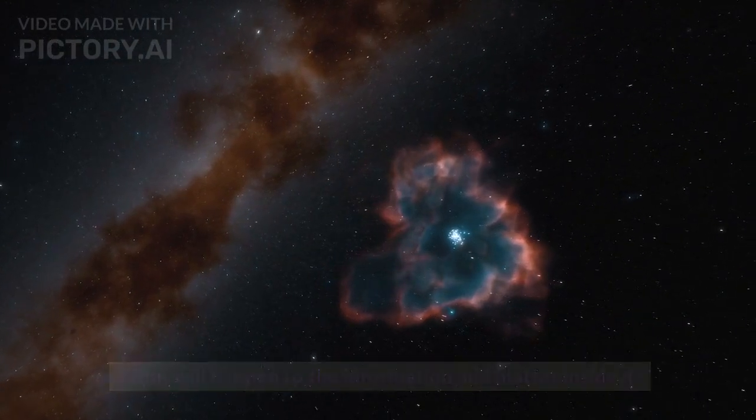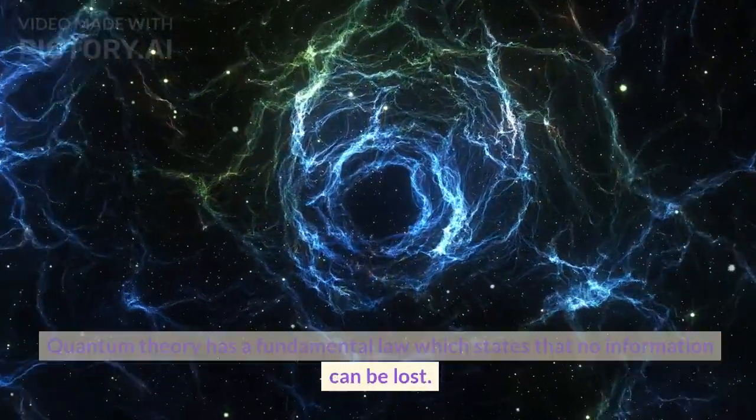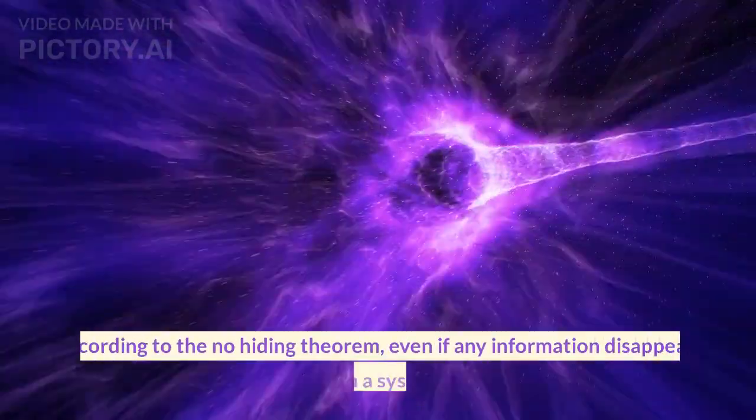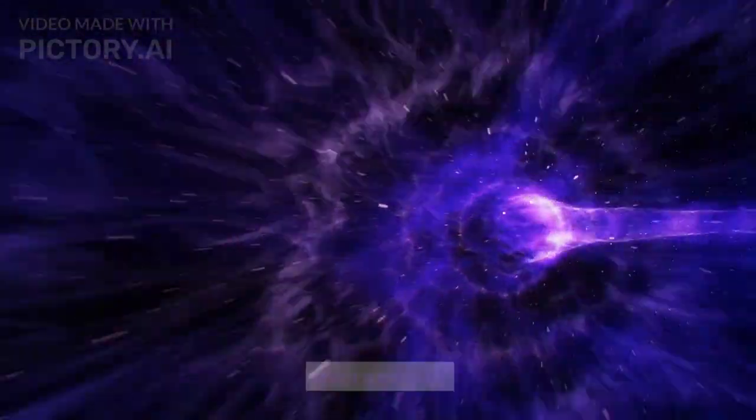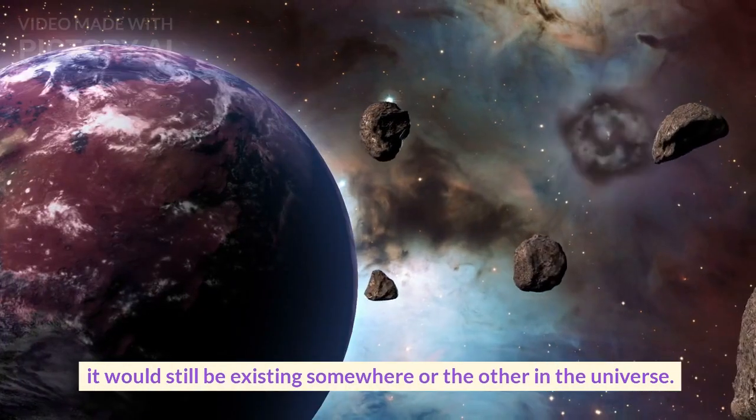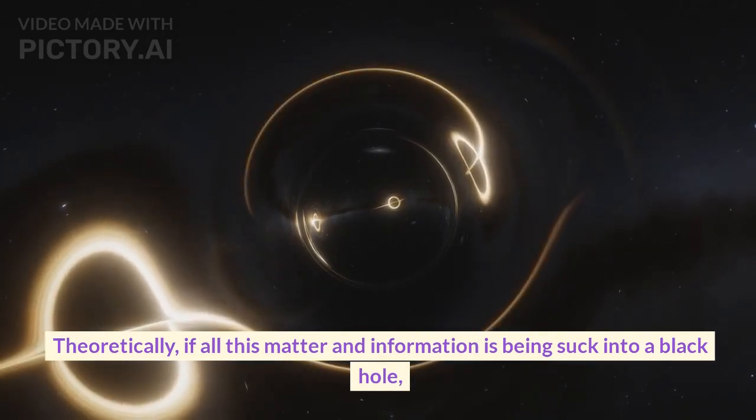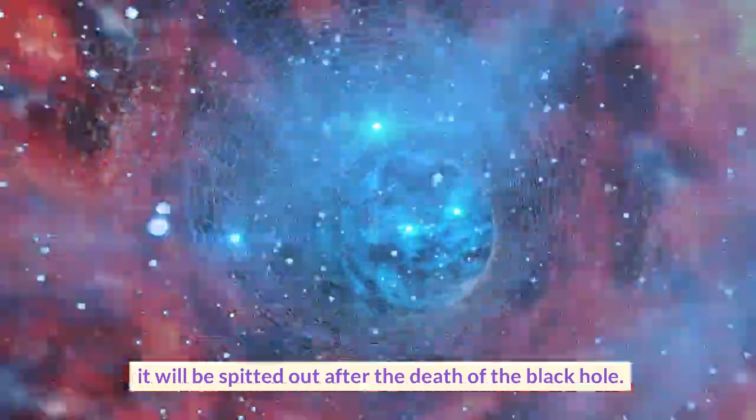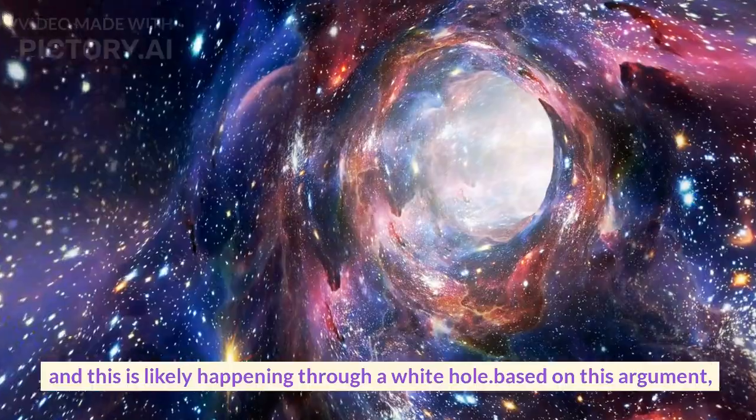Quantum theory has a fundamental law which states that no information can be lost. It is called the no-hiding theorem. According to the no-hiding theorem, even if any information disappears from a system, it would still be existing somewhere or the other in the universe. Theoretically, if all this matter and information is being sucked into a black hole, it will be spit out after the death of the black hole—and this is likely happening through a white hole. Based on this argument, many scientists say that a white hole forms when a black hole dies.